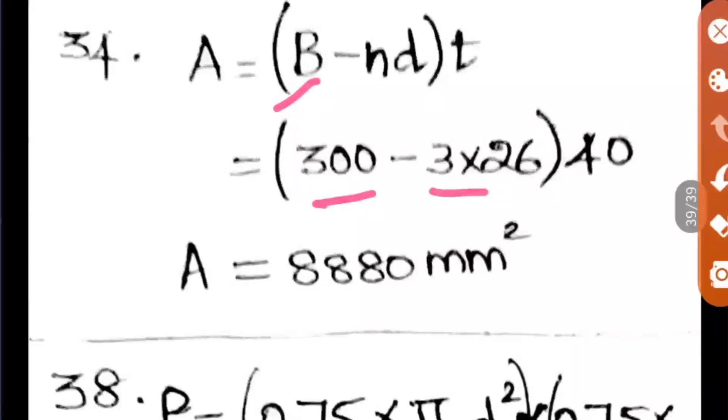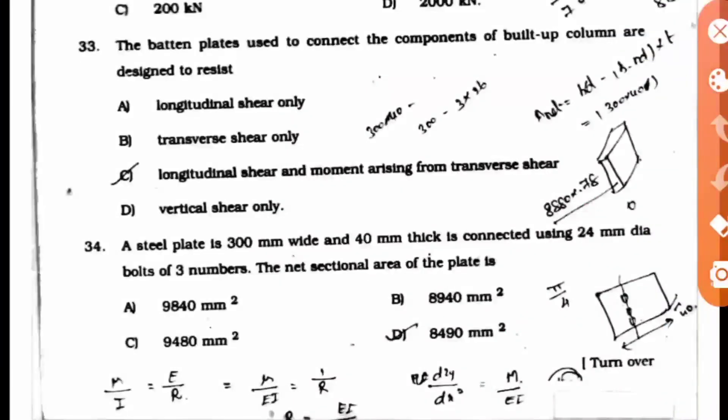The answer we get is 8880 mm², but this option is not given in the answer choices. I've referred to the textbook and the formula is the same, but the answer given is 8940 mm², which is nearest to the answer we found. If anybody knows how accurately 8940 comes, you can give it in the comment section.